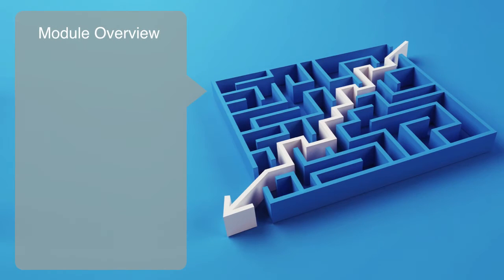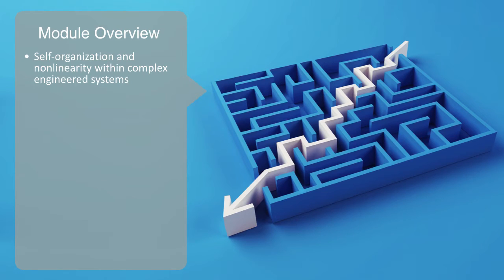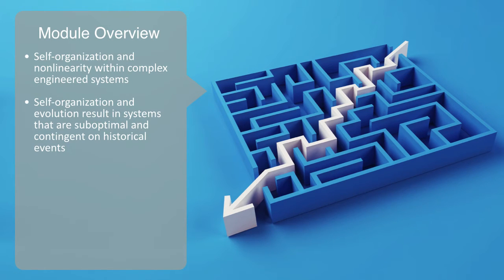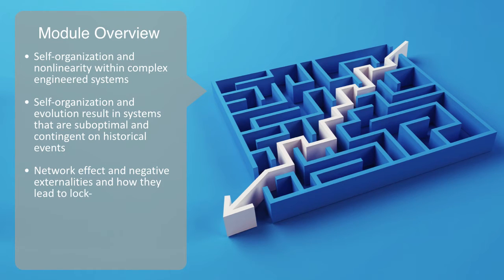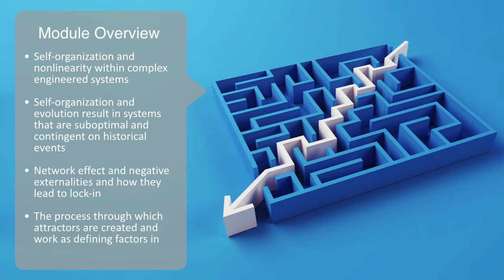In this module we'll be continuing our discussion around self-organization and non-linearity within complex engineered systems, as we talk about path dependency and attractors. We'll look at how the process of self-organization and evolution results in systems that are sub-optimal and contingent on historical events. We'll talk about the network effect and negative externalities and how they lead to lock-in. The key takeaway will be understanding how attractors are created and work as defining factors in the evolution of technology.